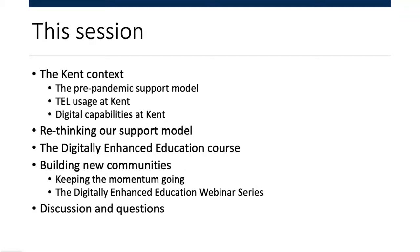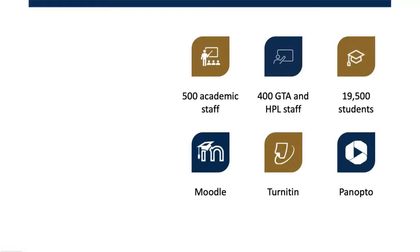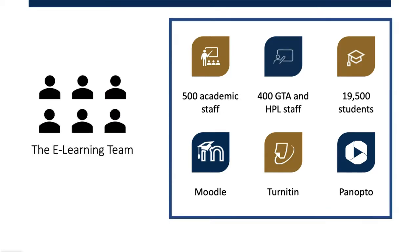Here's some context for Kent: we've got over 500 academic staff and around 400 graduate teaching assistants and hourly-paid lecturers, with 19,500 students across five campuses at Canterbury, Medway, Brussels, Rome, and Paris. Our three core learning technology systems are Moodle as our VLE, Turnitin for e-submission and academic integrity, and Panopto for lecture recording and multimedia. We also use peripheral technologies including audience response tools such as Vevox and web conferencing tools.